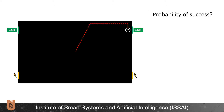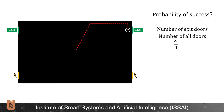What if I asked you to find the probability of success in this game? The traditional way to calculate it would be dividing the number of exit doors by the number of all doors in the room — which is two exit doors over four doors overall — and it's equal to a 50% chance of success. Easy, right?